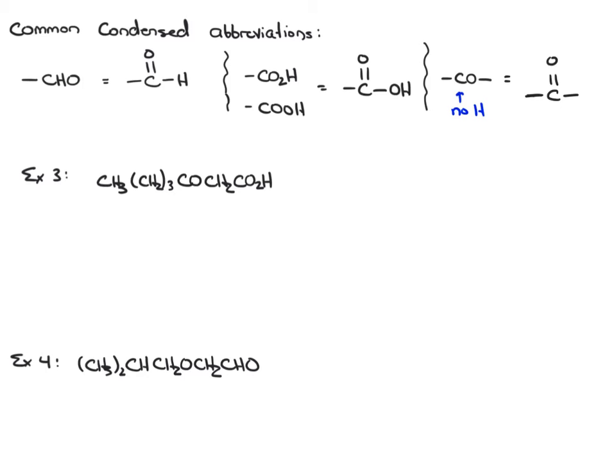Let's finish with a couple of examples converting the condensed structure to a more expanded structure. In this third example, we start with CH3. I like to flip it to show the carbon bonded to the next carbon. We have three CH2s in a row, so I'll write CH2, CH2, CH2.